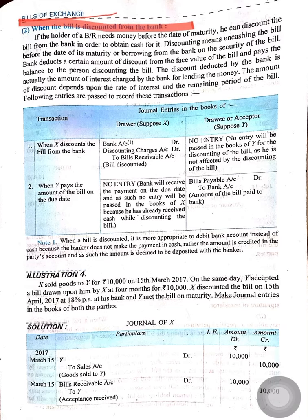When Mr. X writes a bill on Mr. Y, and Mr. Y accepts it, saying he will pay the bill on the due date. But if Mr. X needs the amount before the due date, he cannot go to Mr. Y for the amount. At that time he can go to the bank and ask for the money. The bank will pay him the money and take the bill of exchange from him. The bank will also charge some amount, which will be called discount.